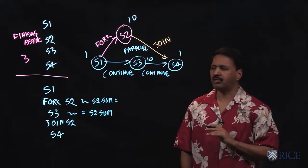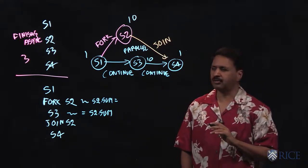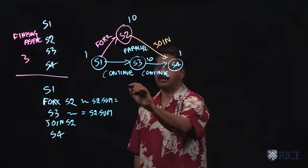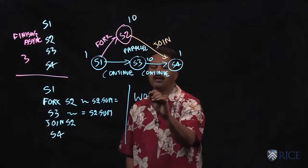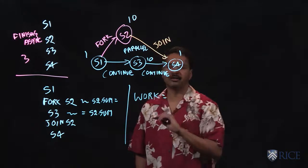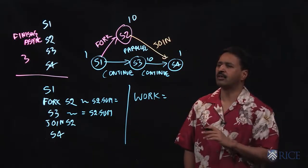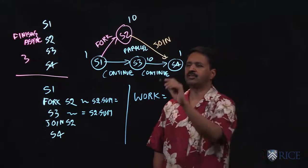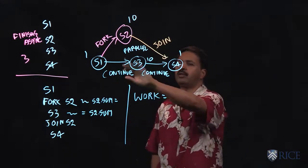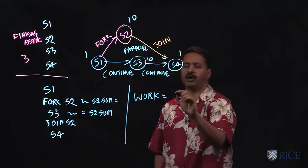There are two important metrics that we will work with to reason about the performance. The first is called the work, and that's simply the sum of the execution times of all the nodes. So in this case it would be 1 plus 10 plus 10 plus 1, that's 22.